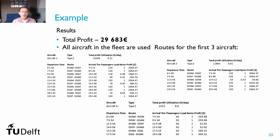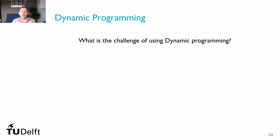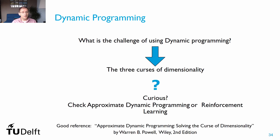We have solved the aircraft routing and timetable design problems using dynamic programming. However, there is a key challenge: the curse of dimensionality, associated with the state space, outcome space, and action space, which makes traditional dynamic programming very hard or impossible to scale to large problems. For further reading, check literature on approximate dynamic programming or reinforcement learning — a good reference is Warren Powell's book, Approximate Dynamic Programming: Solving the Curse of Dimensionality.